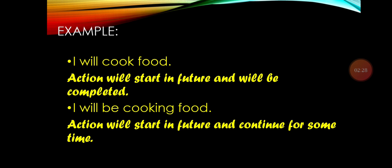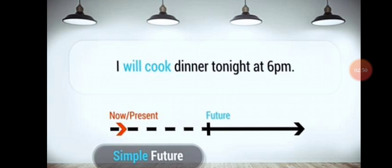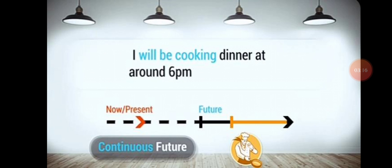So, in which sense will you use Future Indefinite and in which sense Future Continuous? If you are talking about an action that will not be completed — it will continue — you use Future Continuous. But if you are sure the action will start and be completed, you use Future Indefinite. For example: 'I will cook dinner tonight at 6 pm' is Future Indefinite — the cooking will be completed. 'I will be cooking dinner at around 6 pm' shows the cooking will start at 6 pm and continue for some length of time.